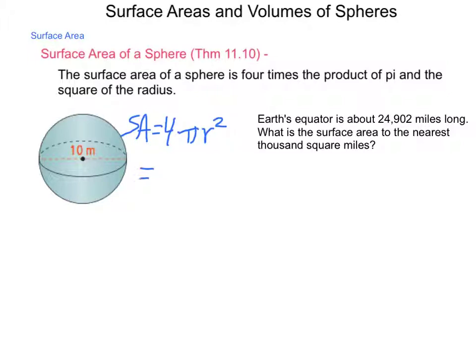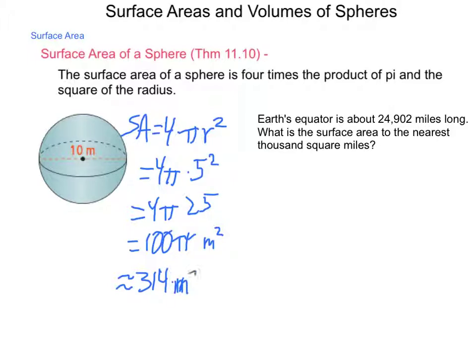We have 4 pi times 5 squared. That'd be 4 pi times 25. 4 times 25 is 100. So, we'd have 100 pi meters squared. Using 3.14 as our approximation for pi, this would come out to be 314 meters squared for our total surface area.